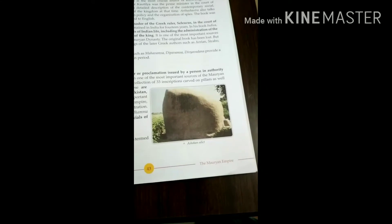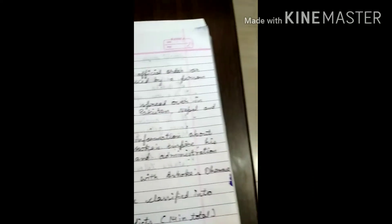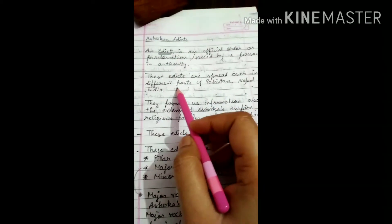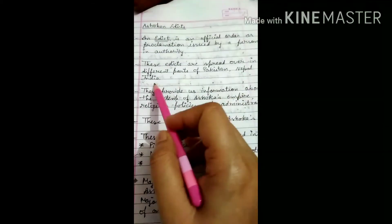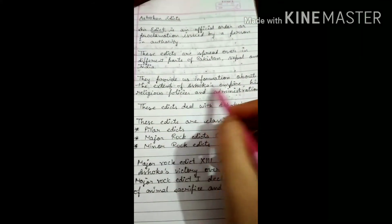These edicts are spread all over in different parts of Pakistan, Nepal, and India. They provide us information about the extent of Ashoka's empire.